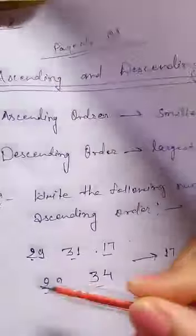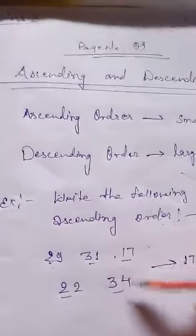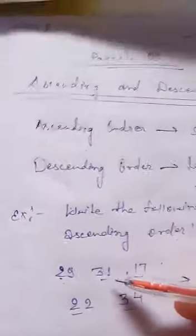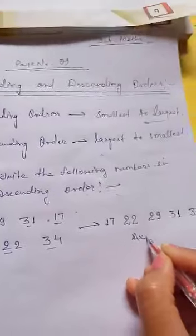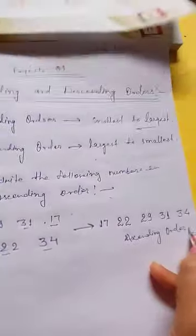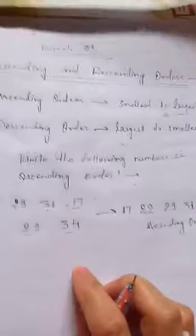Now we compare 31 and 34. We learnt about comparison. The tens place is the same, so we look at the ones place: 1 and 4. Since 1 is smaller than 4, we write 31 first, then 34 as the greatest number. Numbers are now arranged in ascending order.